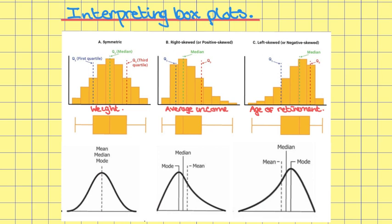Let's look at symmetric distributions. What could be an example? Well, we could have weight. If you took the weight of people in the population, most people's weight would be around the middle — there'd be some very light people and some on the heavy side, but most people would be in the middle.